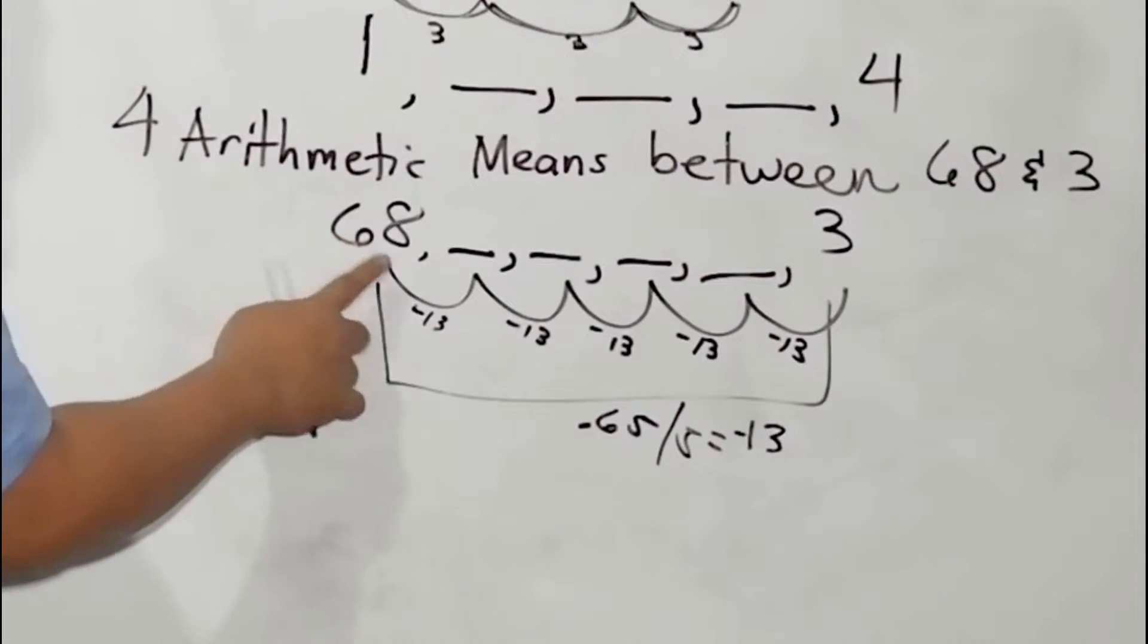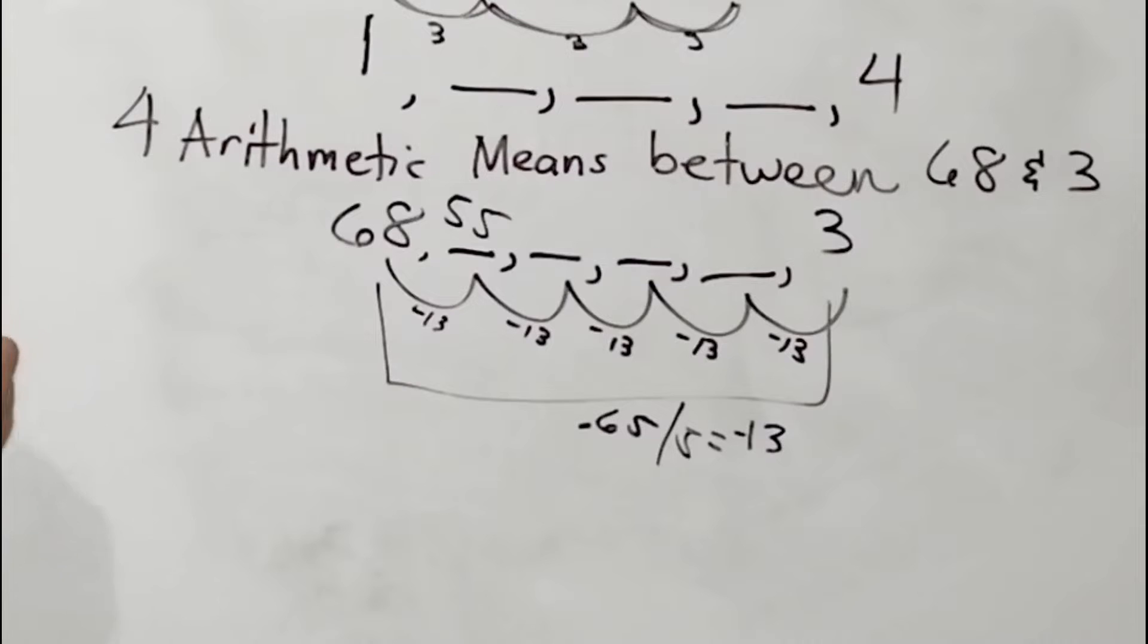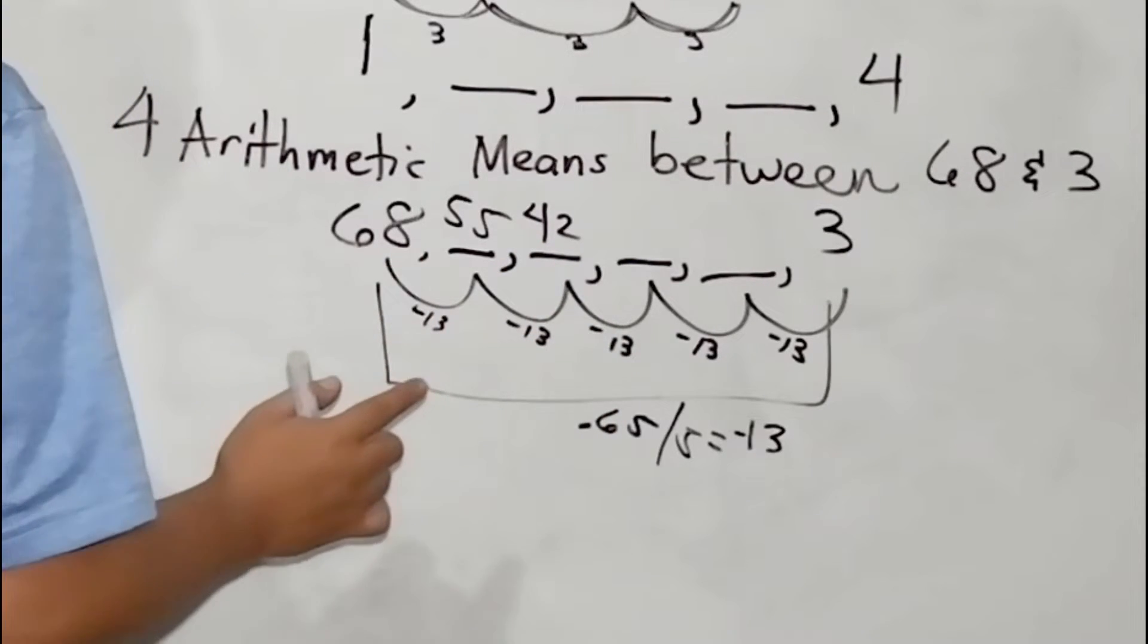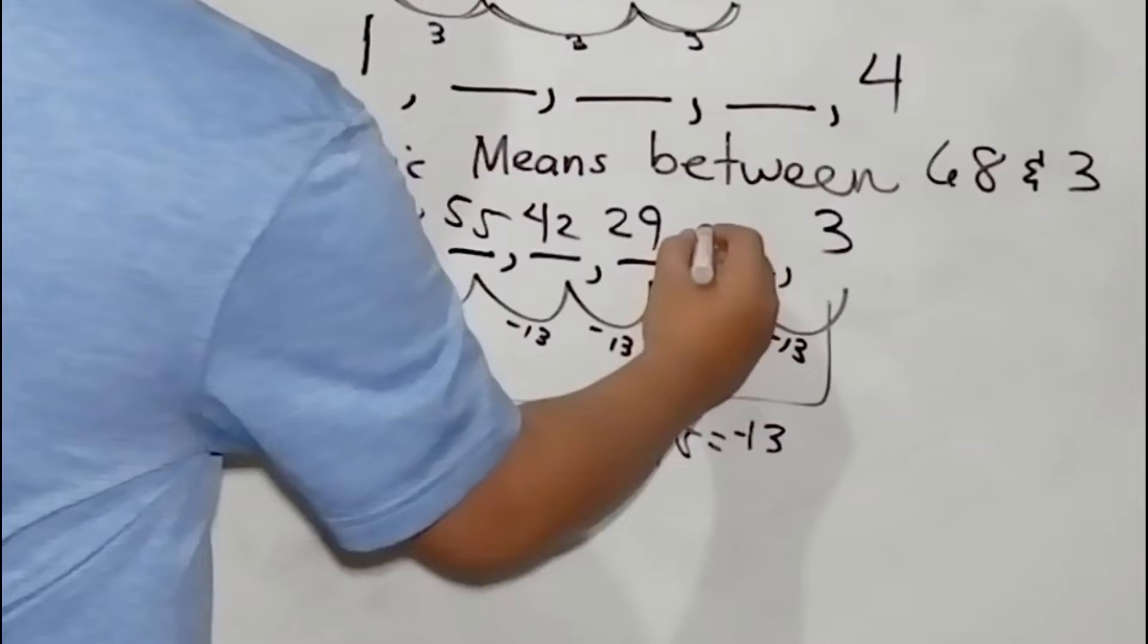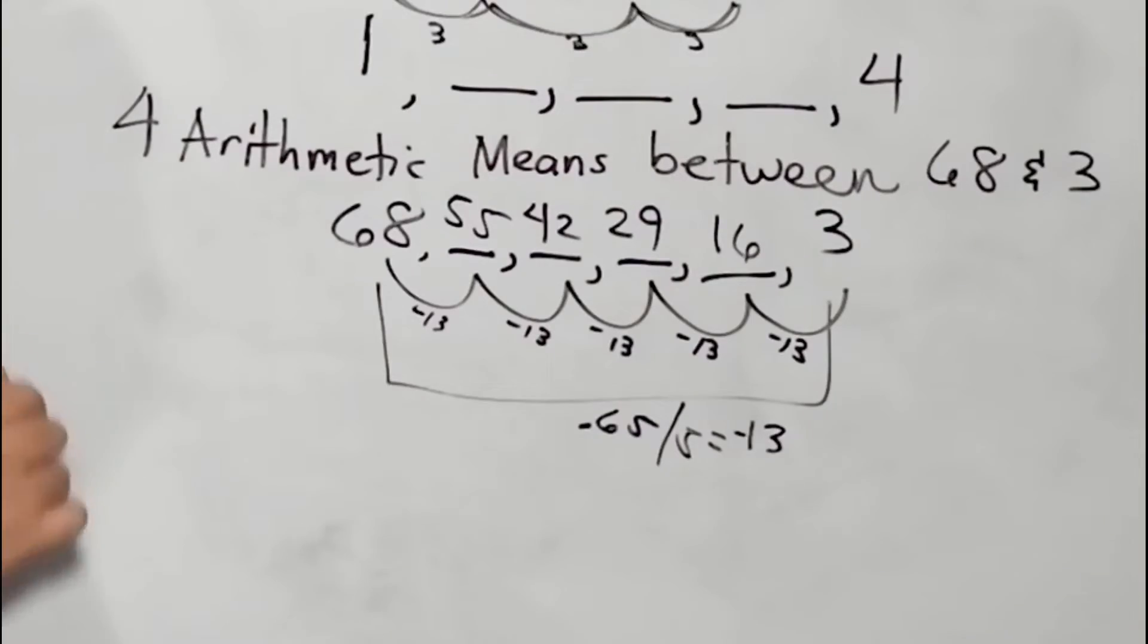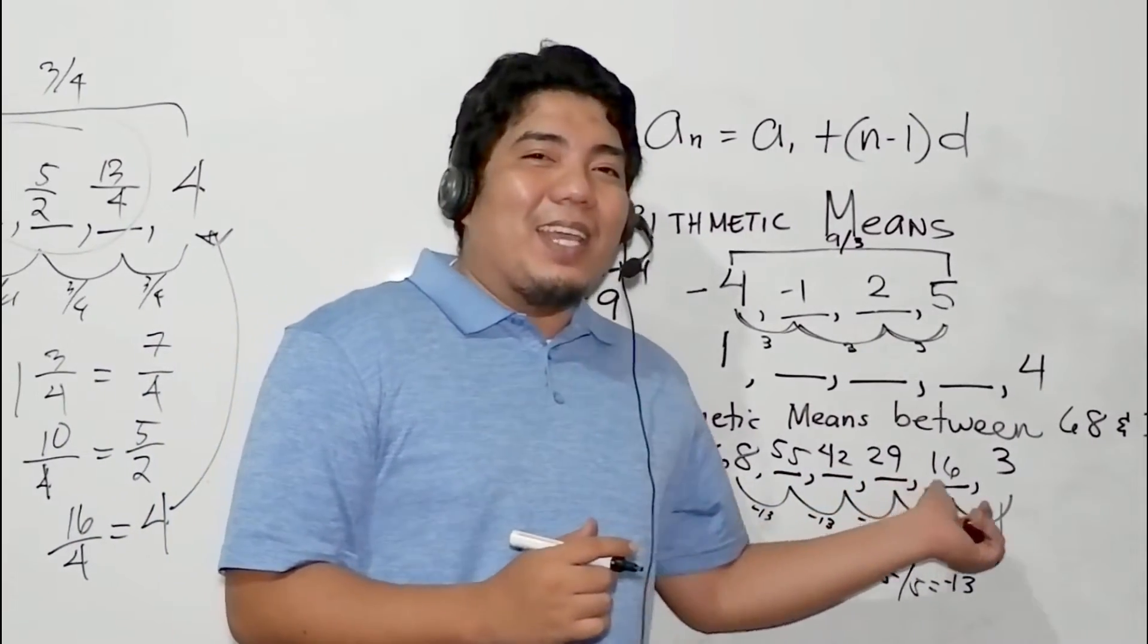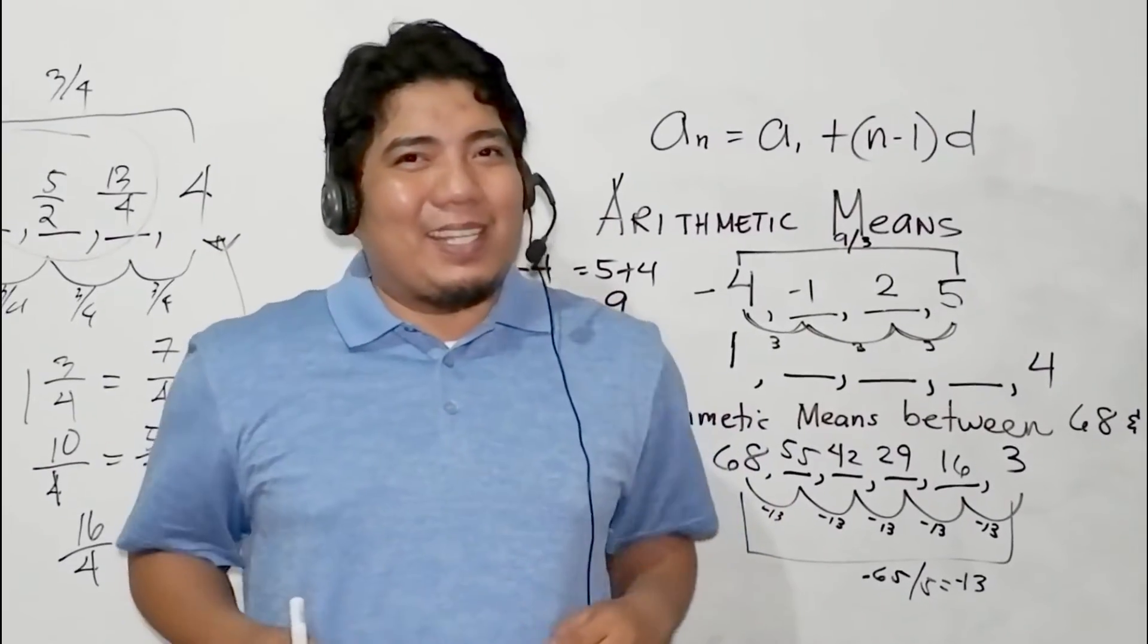Now, let's try. 68 minus 13, that is 55. 55 minus 13, that is 42. 42 minus 13, that will give us 29. 29 minus 13, that is 16. And 16 minus 13, that is positive 3. Therefore, the 4 arithmetic means between 68 and 3 are 55, 42, 29, and 16. And this is how you get the arithmetic means of an arithmetic sequence.